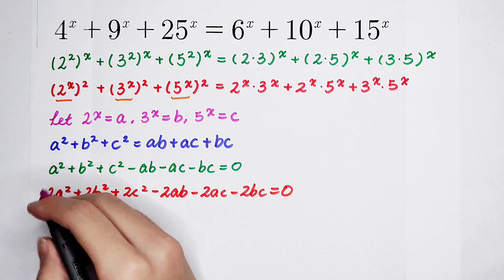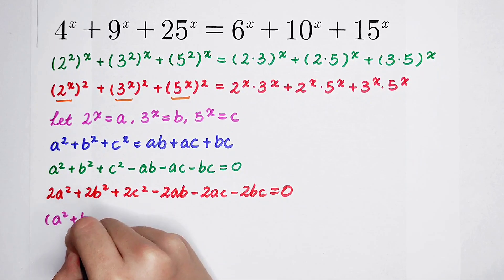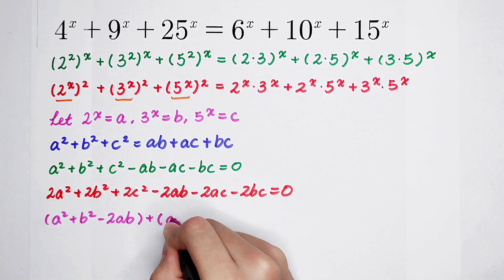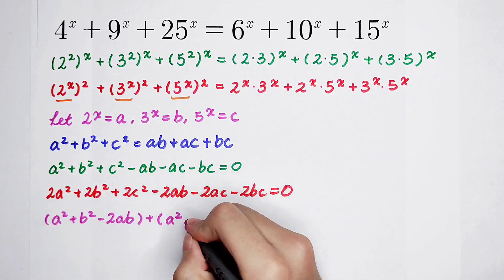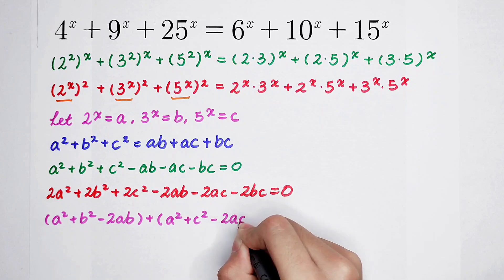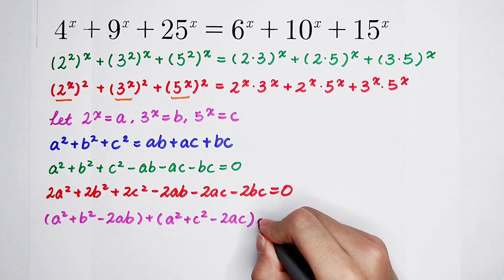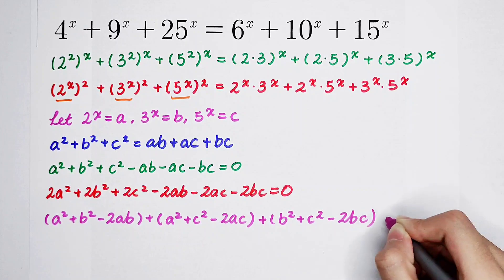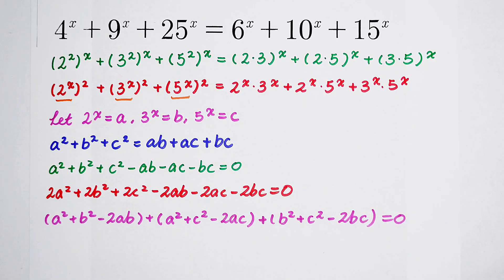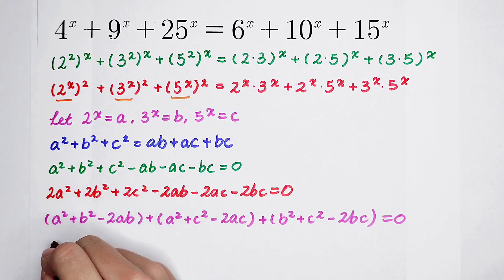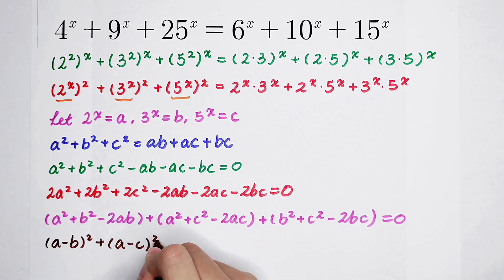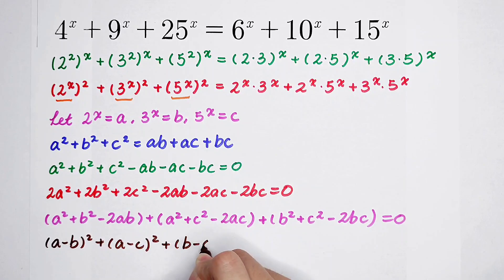Then I'm going to group the terms: pick an A² and a B² and take out −2AB, then pick another A² and C² and take out −2AC, and what's left is B² + C² − 2BC. So now, what's in these three groups? They are all perfect square formulas — the second binomial formula. It factors as (A−B)² + (A−C)² + (B−C)² = 0.